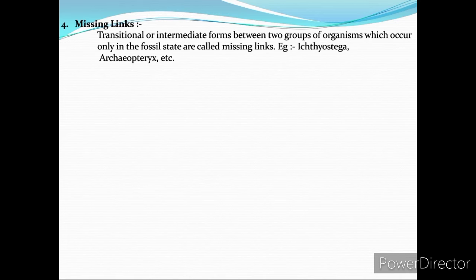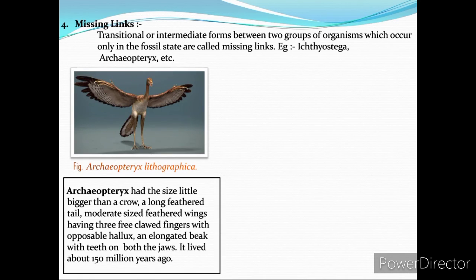Transitional or intermediate forms between two groups of organisms found only in the fossil state are called missing links, for example Ichthyostega and Archaeopteryx. Archaeopteryx had the size of a crow, a long feathered tail, moderately sized feathered wings, three clawed fingers with an opposable hallux, and an elongated beak with teeth on both jaws. It had both reptilian and avian characters and lived around 150 million years ago.